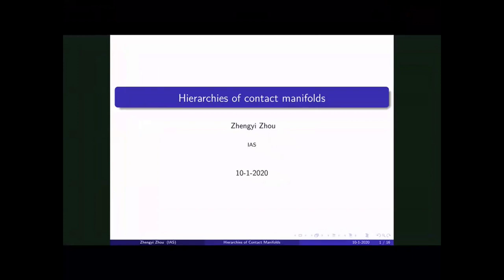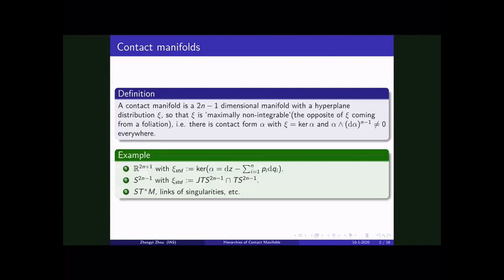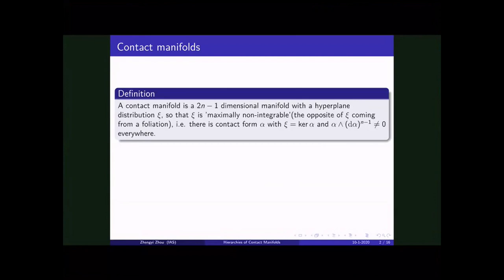Okay. So my research focus is on symplectic and contact topology. So let me first tell you what's the definition of a contact manifold. The contact manifold is an odd-dimensional manifold with a hyperplane distribution ξ, such that ξ is maximally non-integrable. That is, it's opposite of ξ is a foliation. The formula is like saying we have a one form alpha such that ξ is a kernel of alpha. Such that alpha wedge d alpha to the n minus one is non-zero.